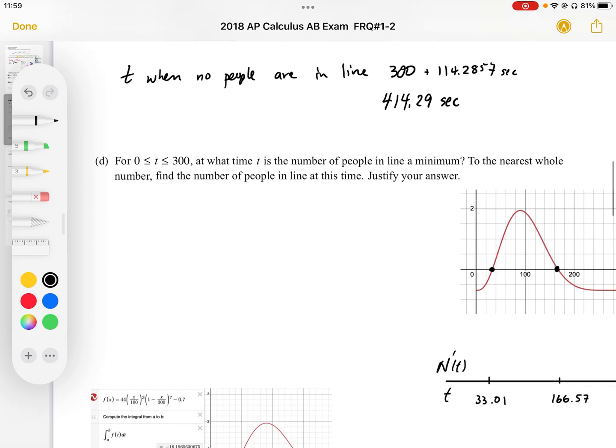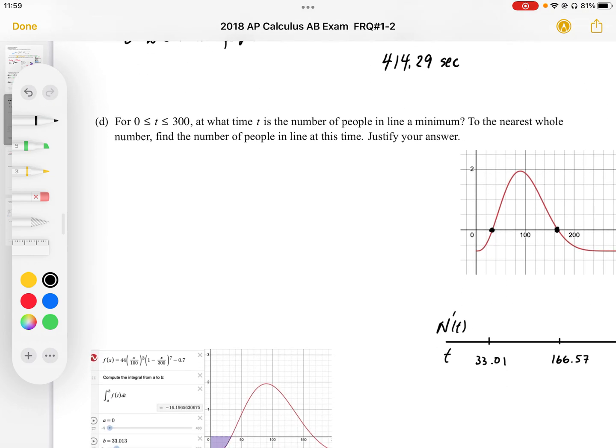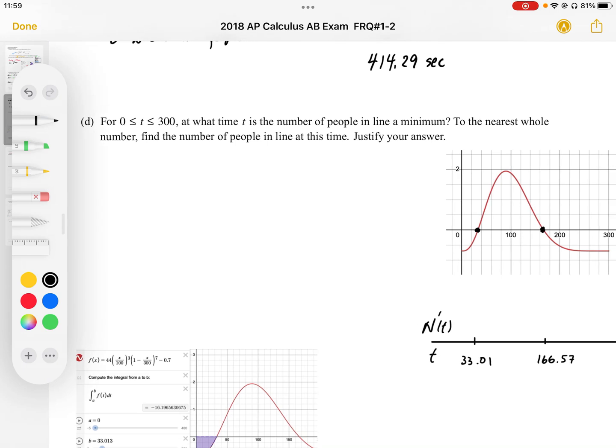Part 1d says for t between 0 and 300 seconds, at what time is the number of people in line a minimum? To the nearest whole number, find the number of people in line at this time, and justify my answer.